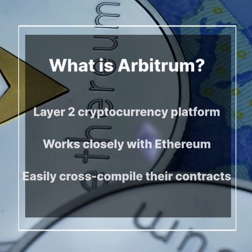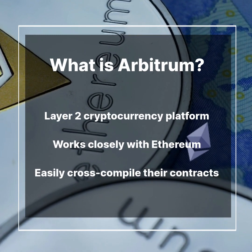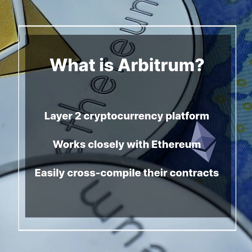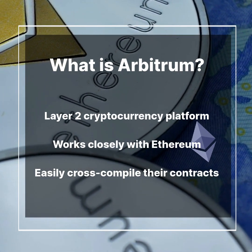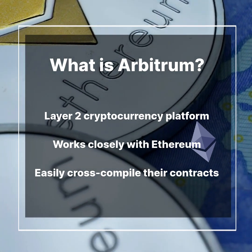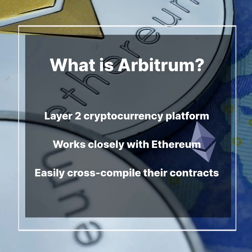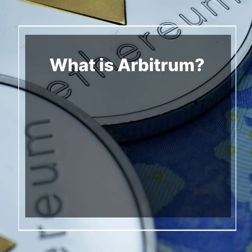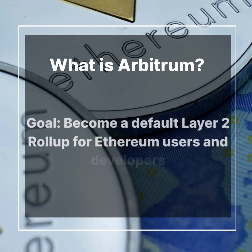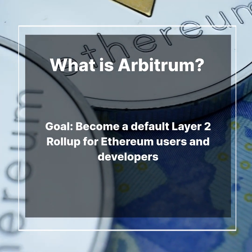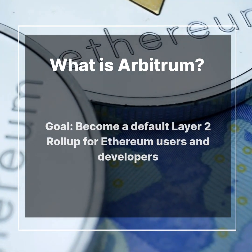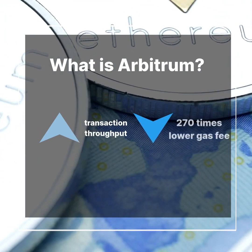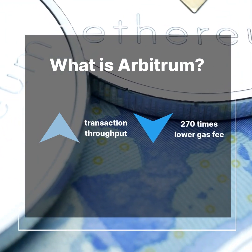Arbitrum is a layer 2 cryptocurrency platform that works closely with Ethereum. It allows developers to easily cross-compile their contracts to run on Arbitrum through a combination of protocol design and virtual machine architecture. Its goal is to become a default layer 2 rollup for Ethereum users and developers, with higher transaction throughput and 270 times lower gas fee.